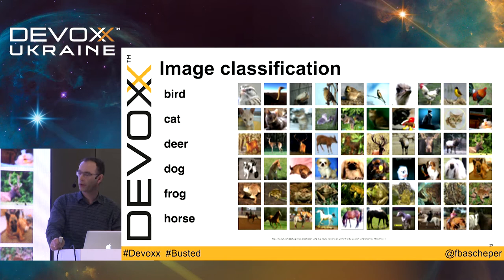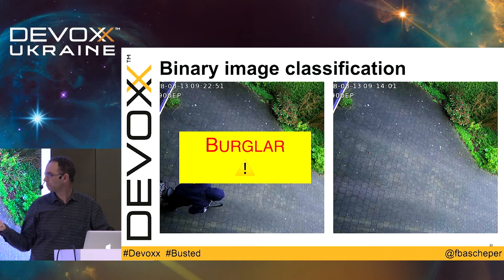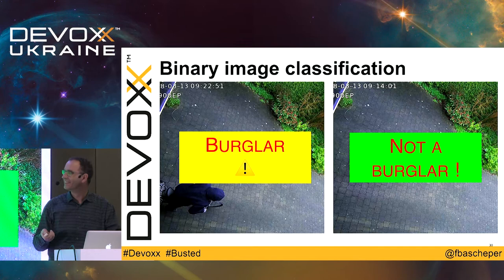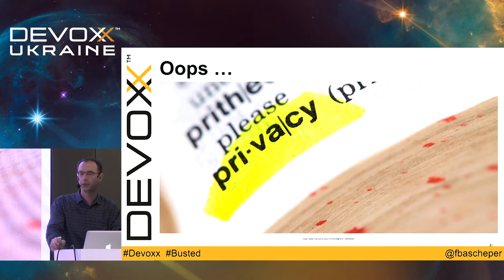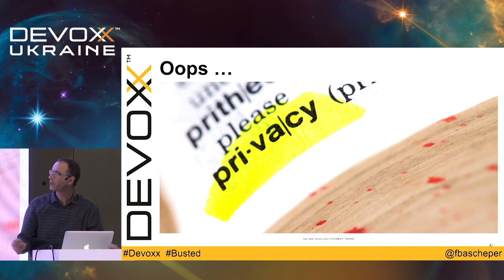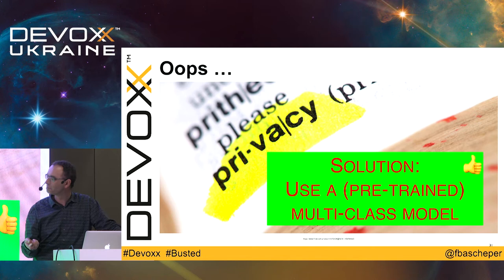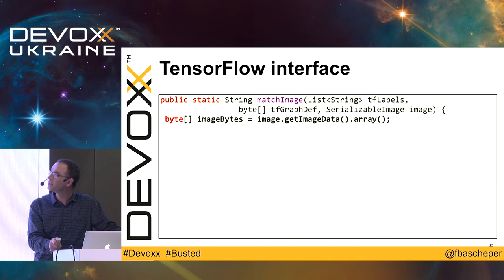There are two types of image classification. First, multi-class image classification — a set of images where one is a bird, another a cat, a deer, a car, whatever. Second, binary image classification — in this case, this is a burglar, or this is not a burglar. There's one slight problem: in the EU we have GDPR rules which have everything to do with privacy. I can't just show my model and let you see all the people who have come up my driveway. So I'm using a pre-trained multi-class classification model to have something to demonstrate today without privacy concerns.